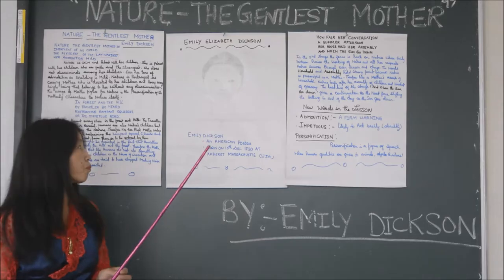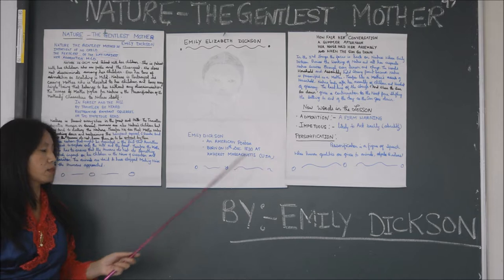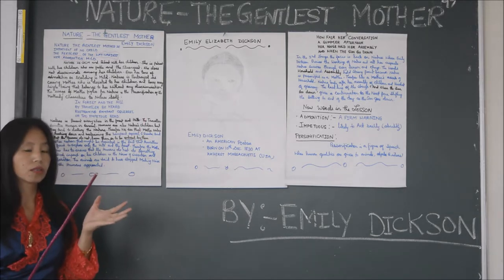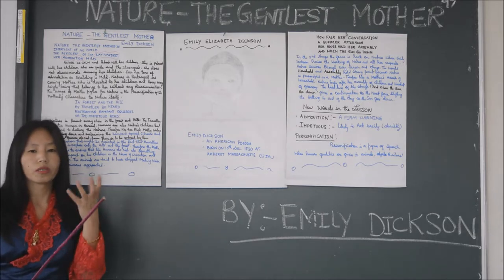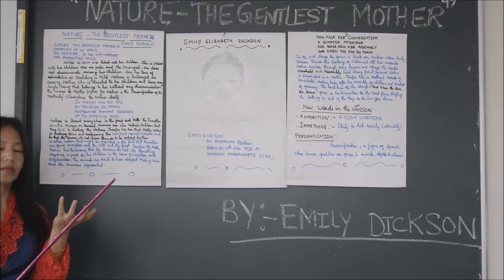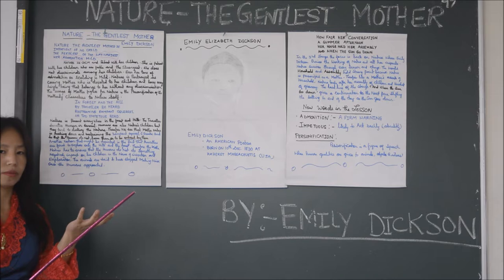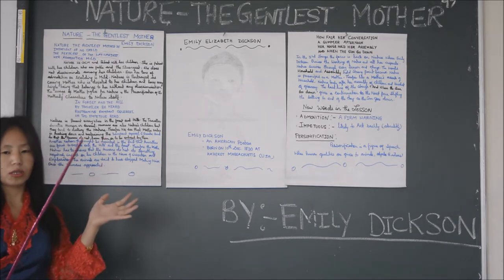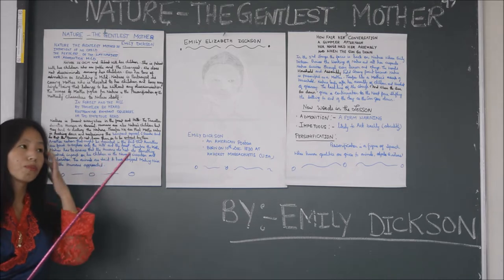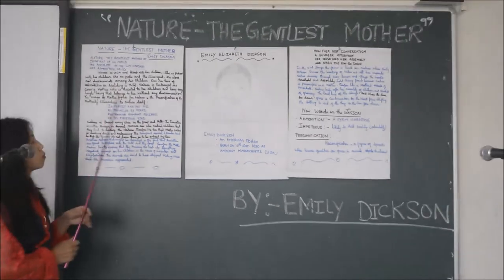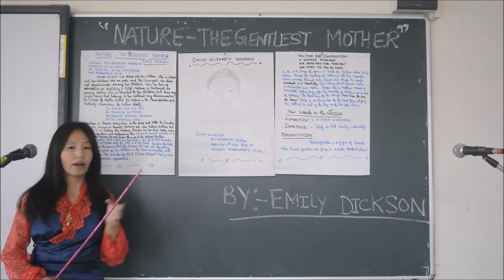Emily Dickinson has described our beautiful nature as our mother. Mother is the greatest gift in our lives — without a mother, we cannot imagine life. In every situation, a mother is there by our side. In the poem there are six stanzas, each with four lines, and today we are going to learn only three stanzas.